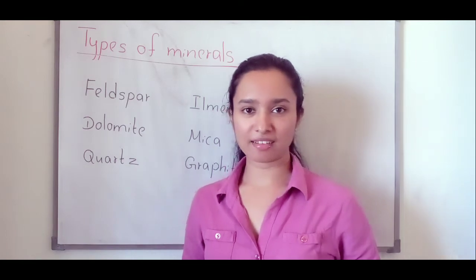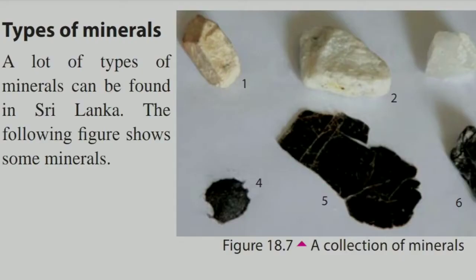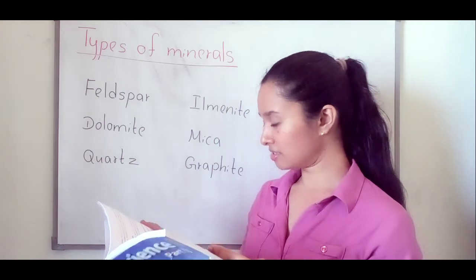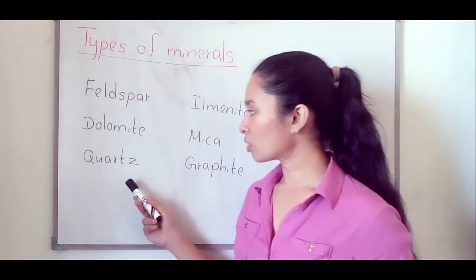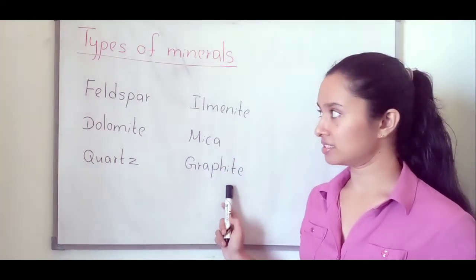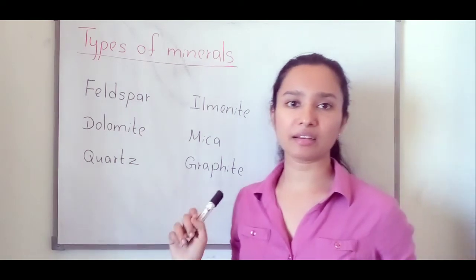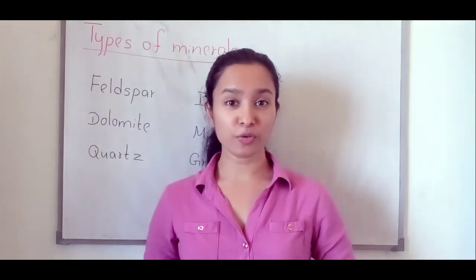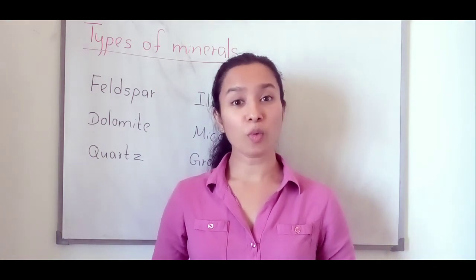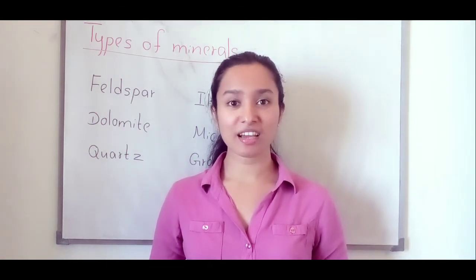Now let's look at the types of minerals. We can find many types of minerals in Sri Lanka. Look at the picture on page number 103. The minerals found in Sri Lanka include feldspar, dolomite, quartz, ilmenite, mica, and graphite. Now we know the types of minerals and the types of rocks. Next, we will discuss about rock weathering.